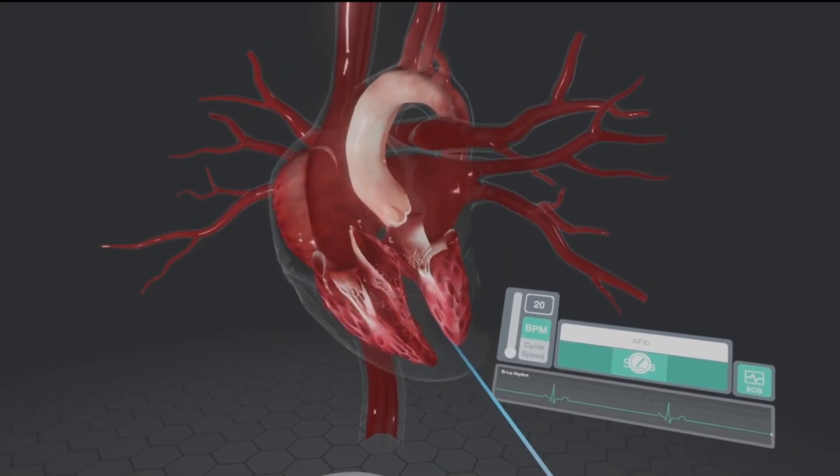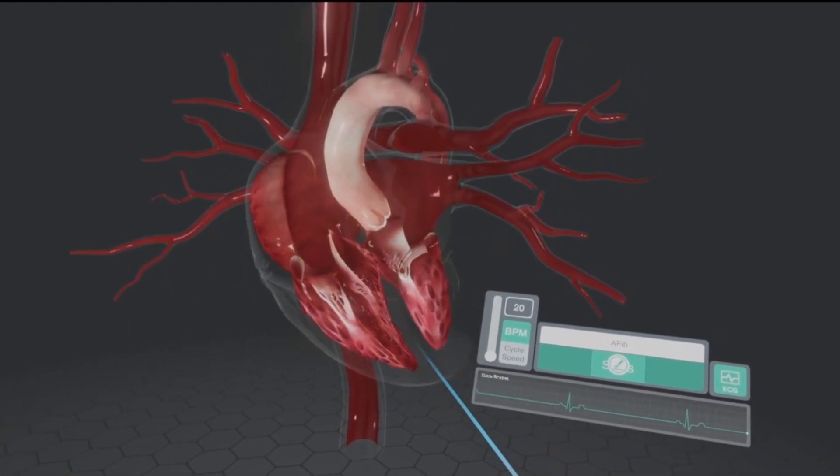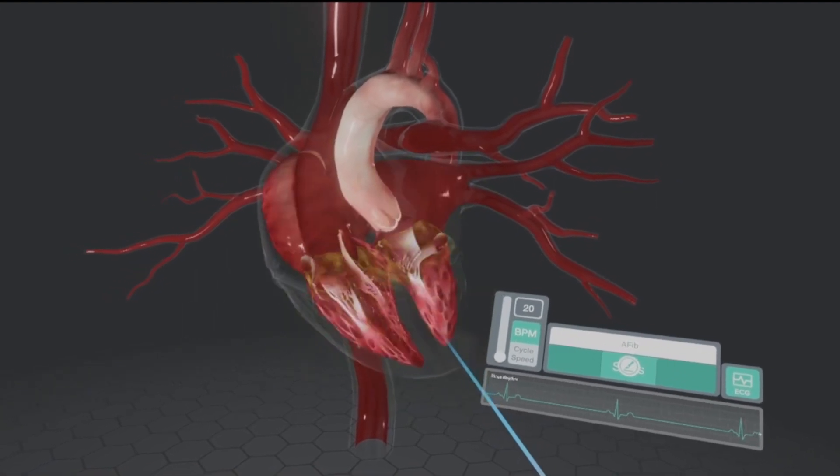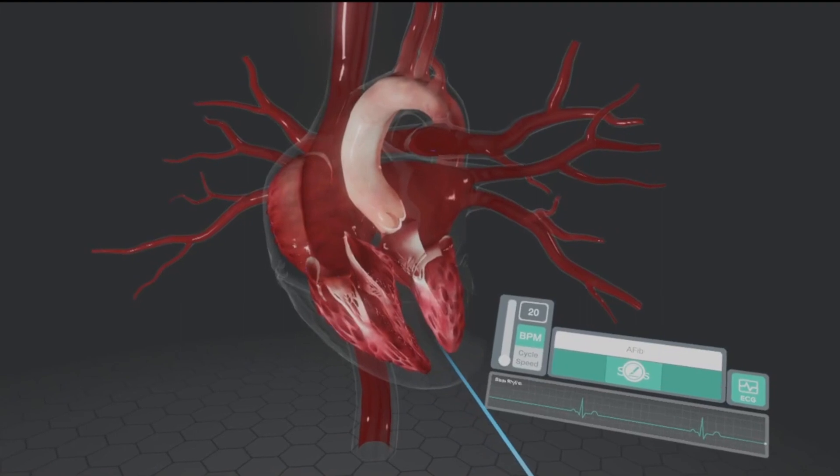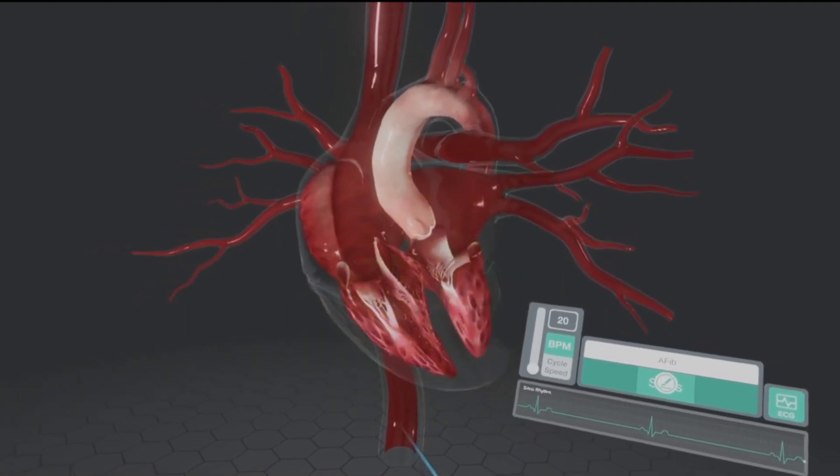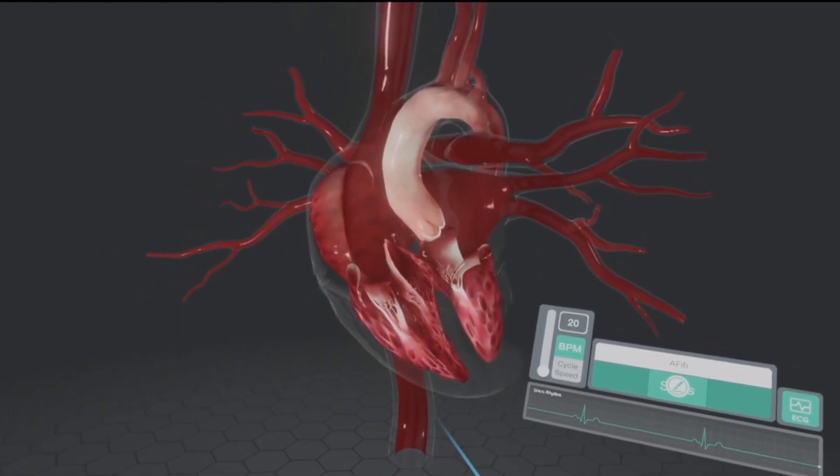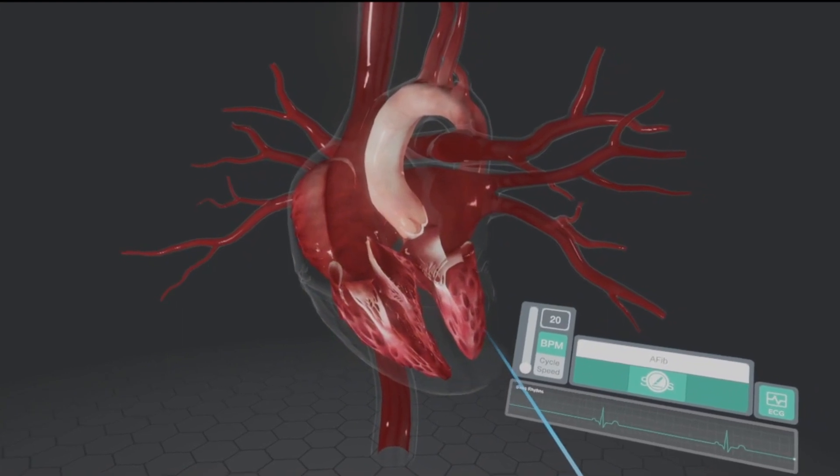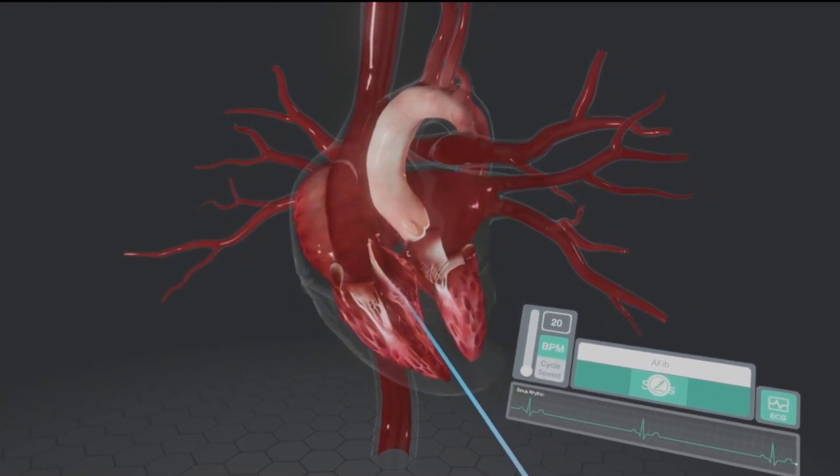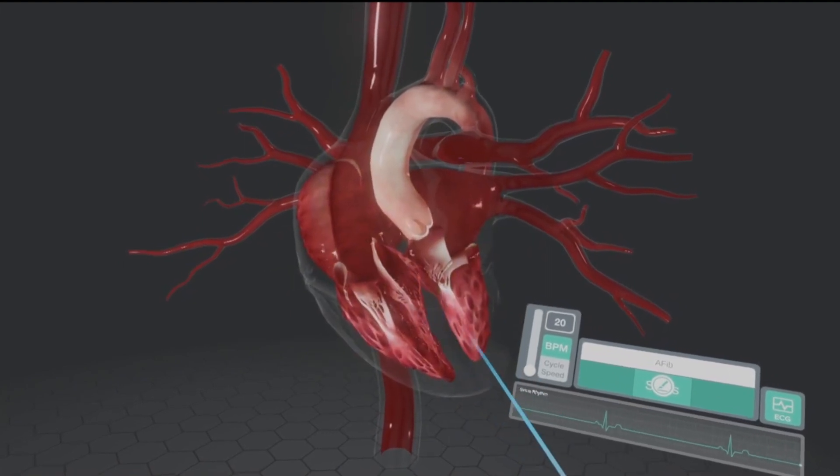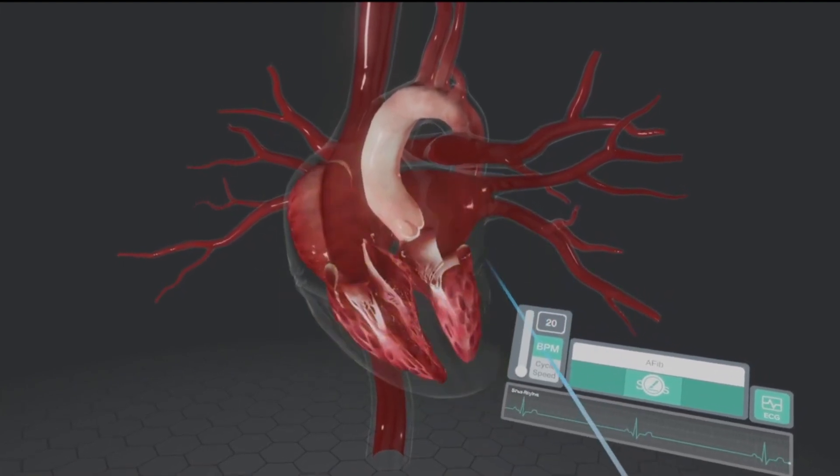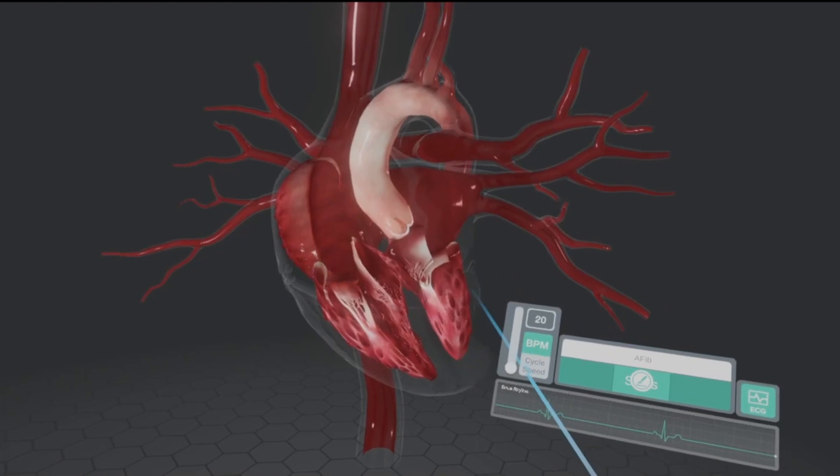And then we have ventricular diastole, which is the relaxation of the ventricles. And that's the passive refilling of both the atria and the ventricles. The atria refill from the superior and the inferior vena cava. And the ventricles are filling from the atria. The right atria, and then also collecting back from the lungs for the left atria.